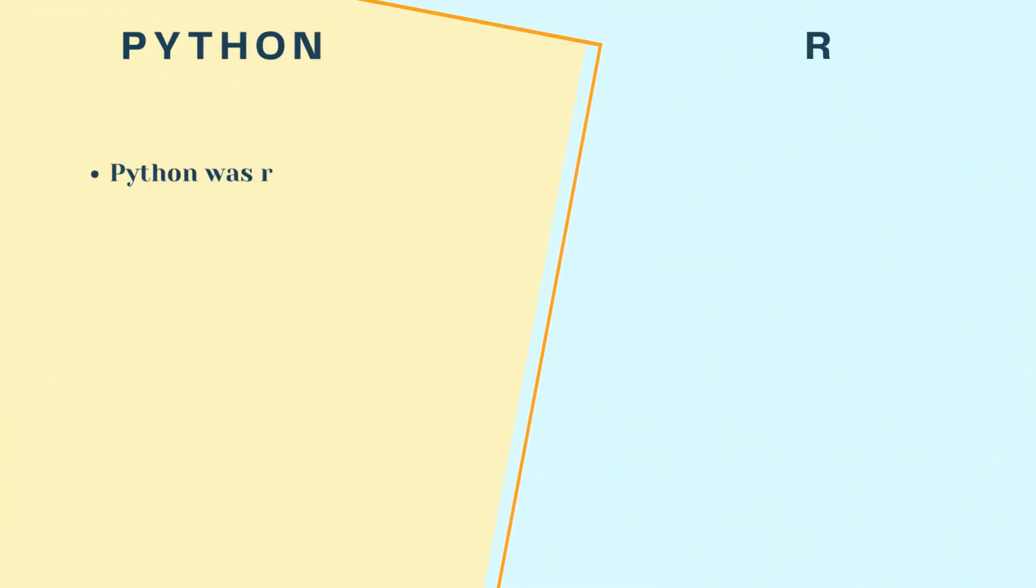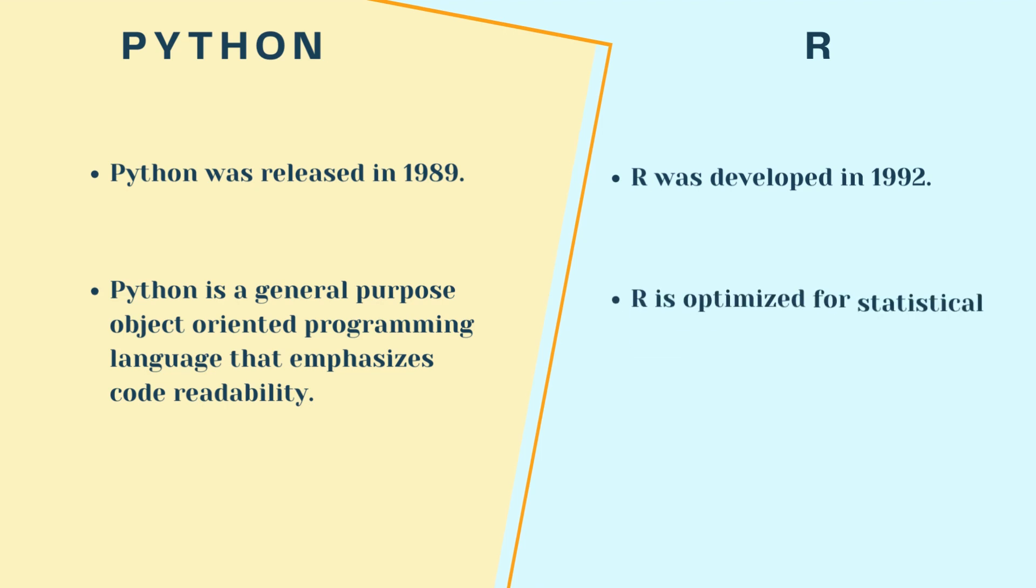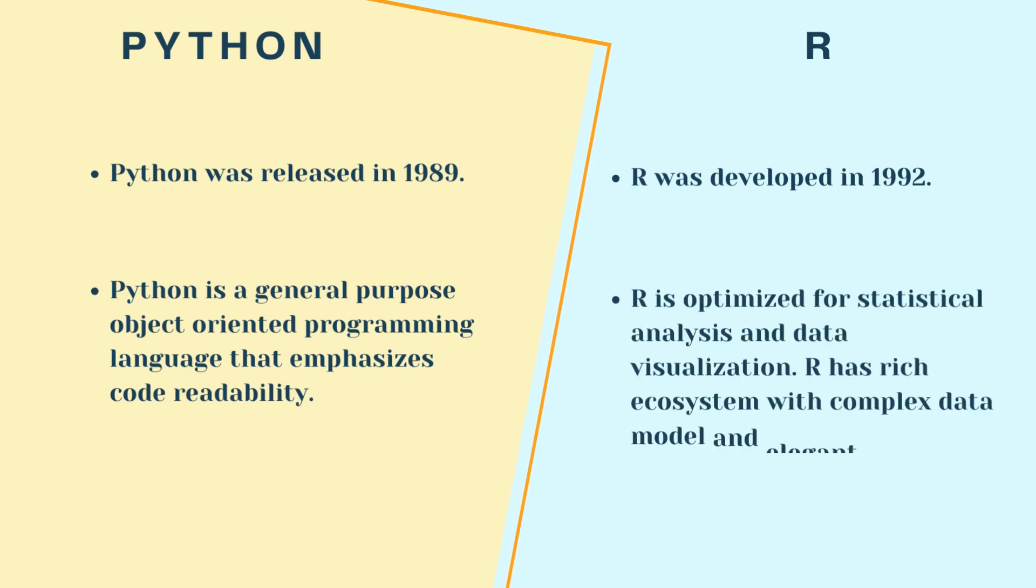Python was released in 1989, whereas R was developed in 1992. Python is a general purpose object-oriented programming language that emphasizes code readability, whereas R is optimized for statistical analysis and data visualization.